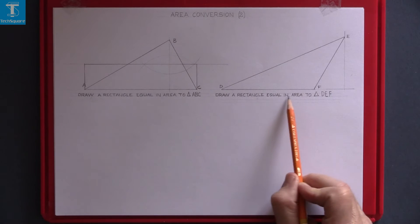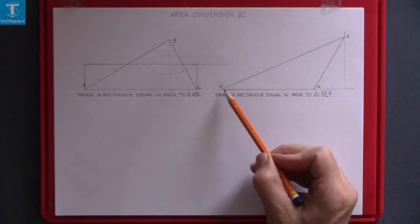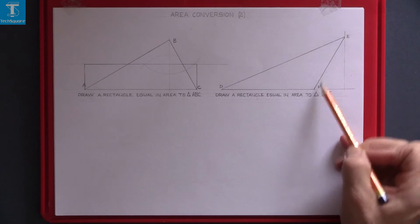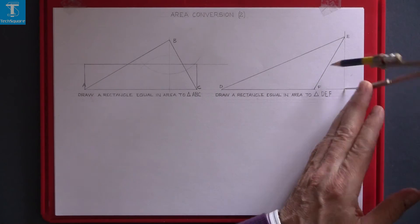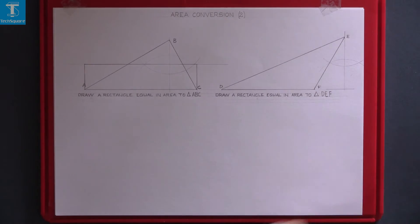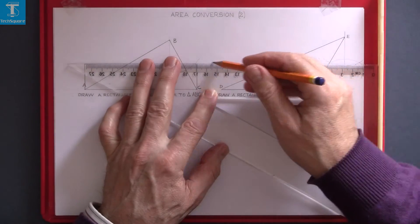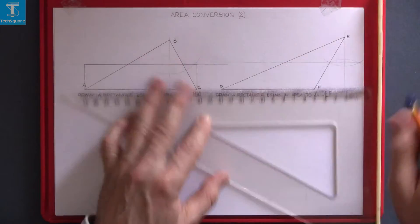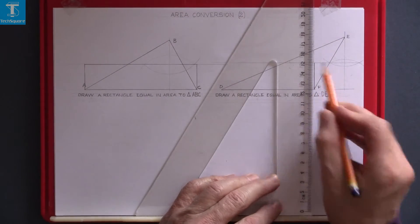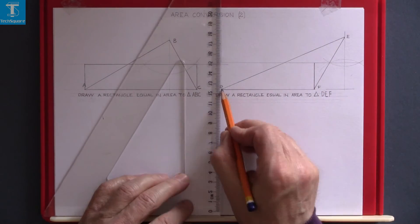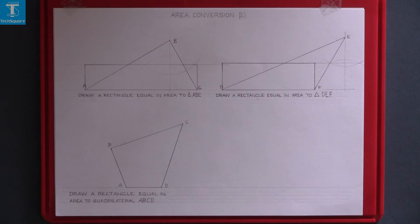Draw a rectangle equal in area to triangle DEF. Bisect the vertical height, draw a level line through and draw up from the two points on the base. And again that rectangle is equal in area to the triangle.